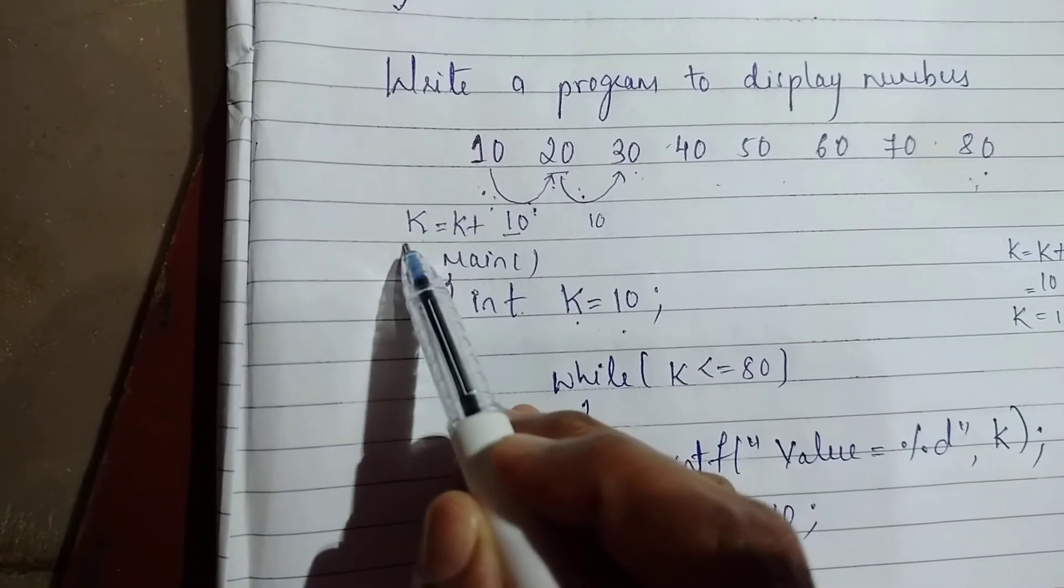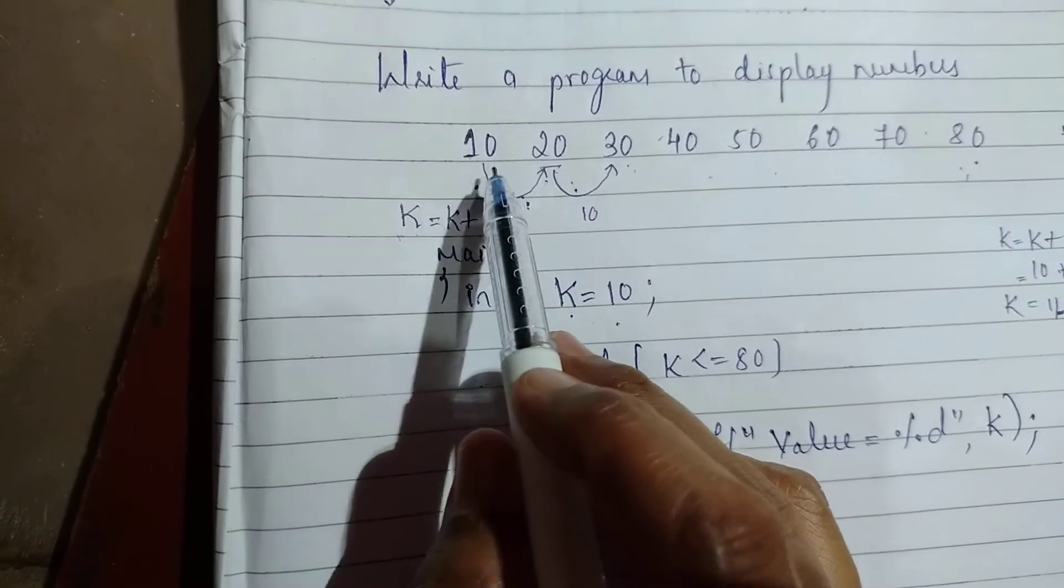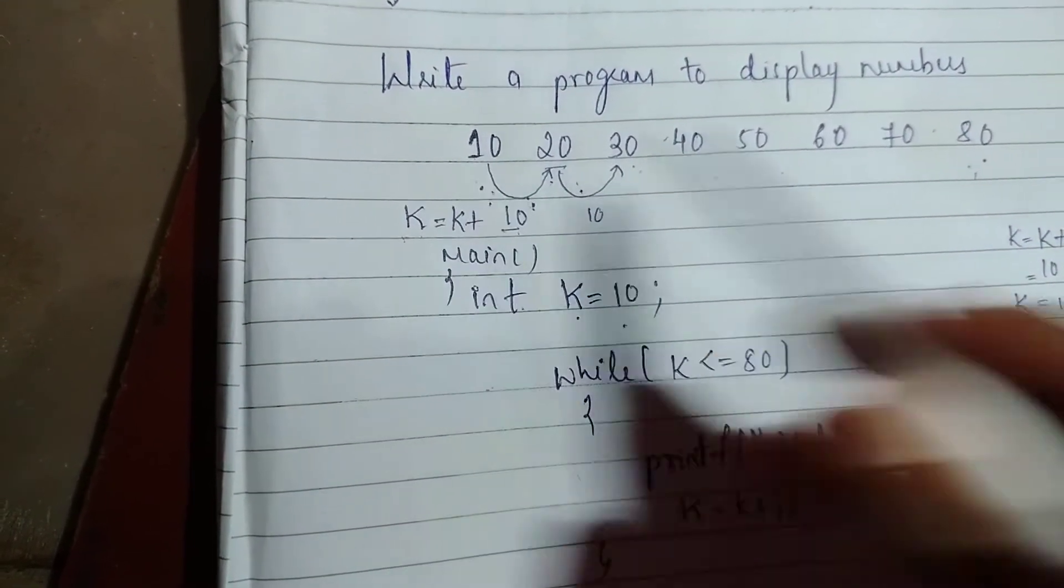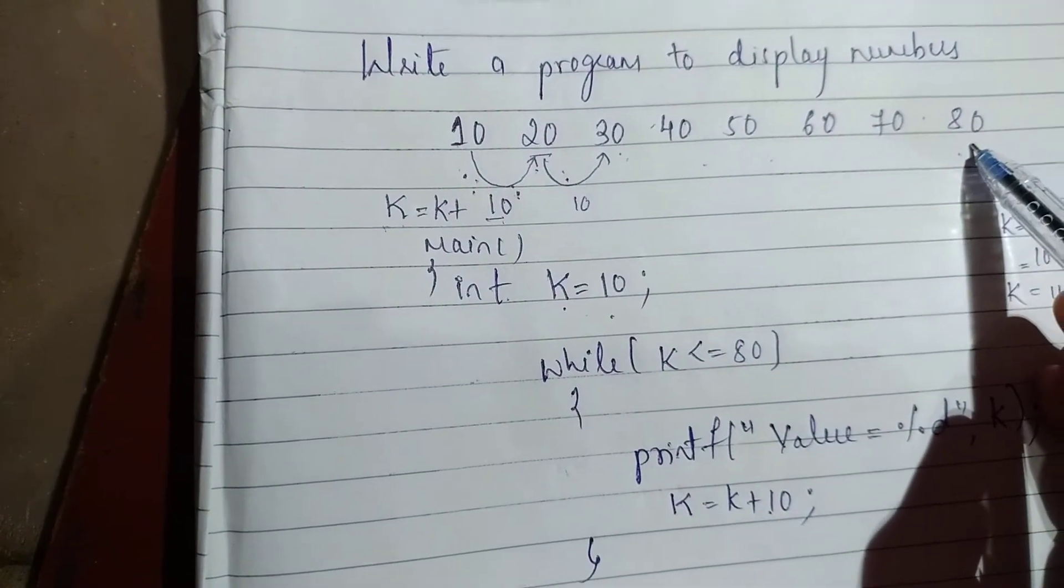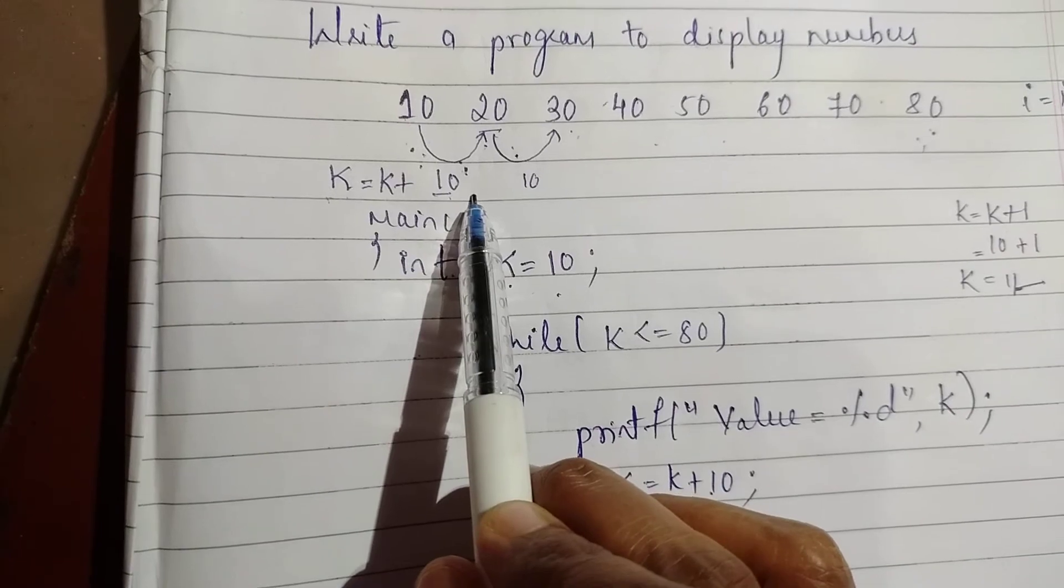my increment statement is K = K + 10. So the initial value K is 10, the final condition is up to 80, and the increment statement is K = K + 10.